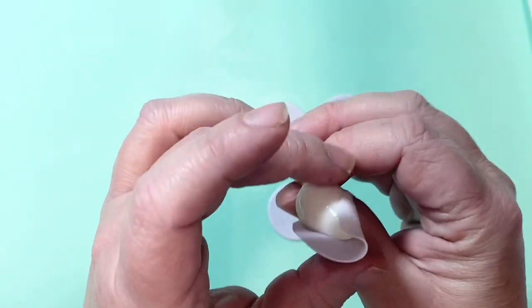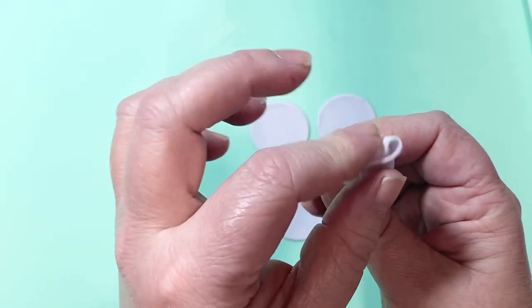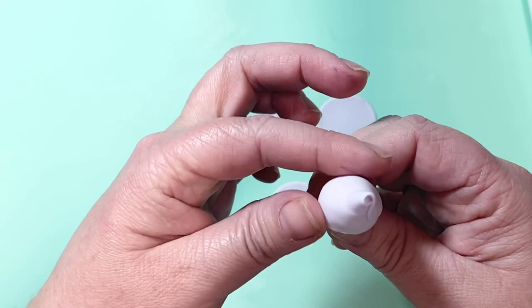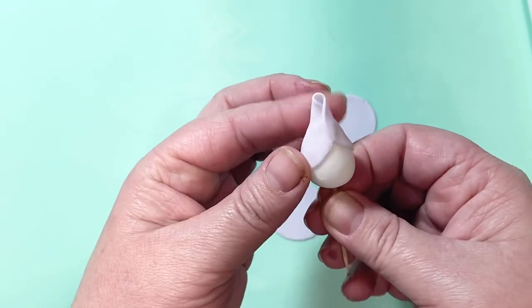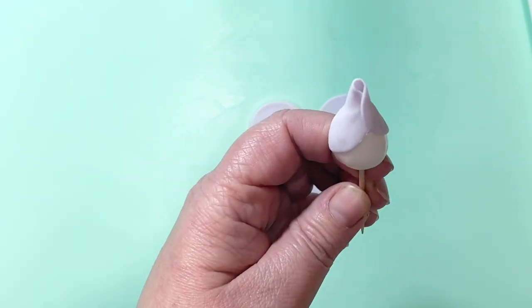Turn your bud around and bring in the other side so it overlaps nicely, so you've got a nice tight little bud to start your rose. Always neaten around the bottom and just press it nice and flat so it doesn't bulge out too much.